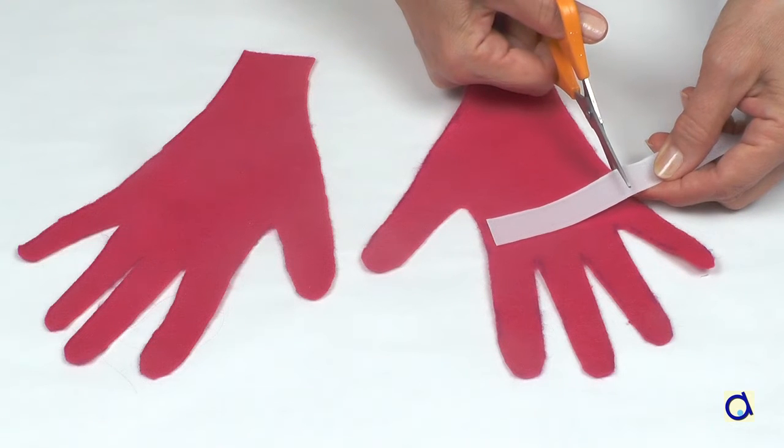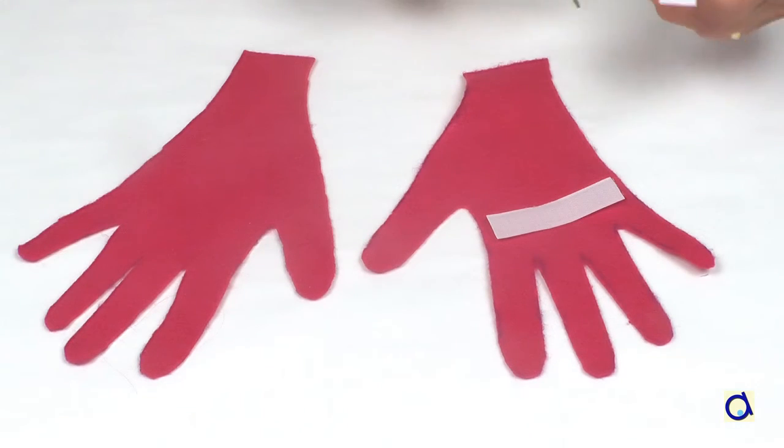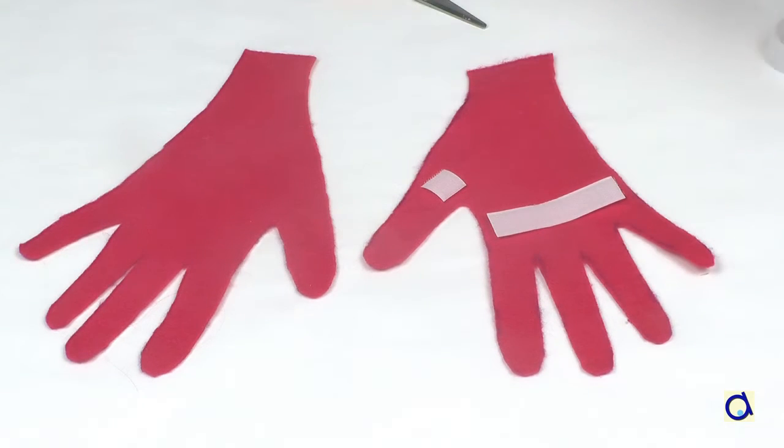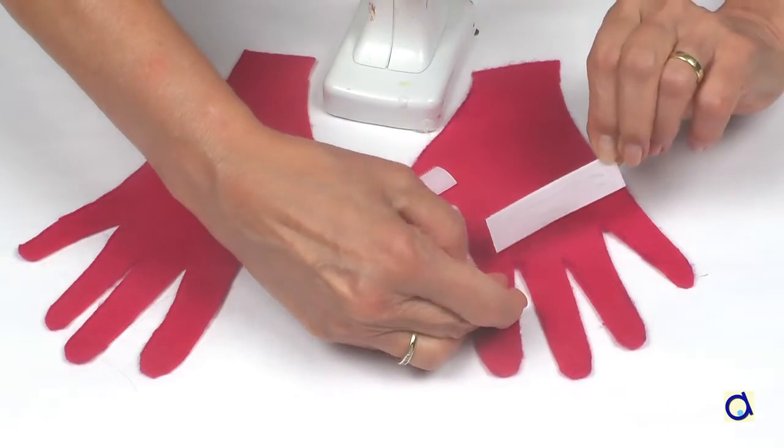Take some velcro. Cut a strip of the width of the hand and take one side of the velcro that you place at the bottom of the four fingers. Then cut a smaller piece that you place at the bottom of the thumb. Glue these two pieces on the felt with hot glue.